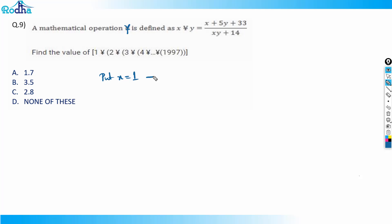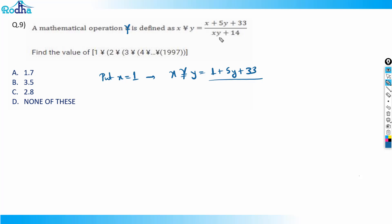For example, if I put x equal to 1, then x γ y becomes 1 plus 5y plus 33, divided by 1·y plus 14, which gives 5y plus 34 over y plus 14. I'm not getting a simplification here — I can't eliminate one variable — so I move on.